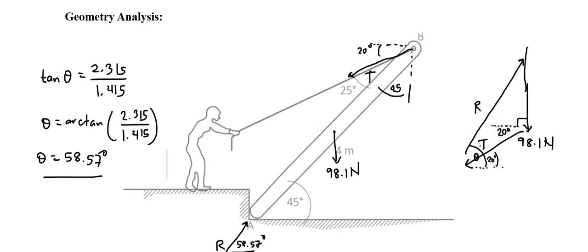Given that this angle here must also be equal to 20 degrees by the Alternate Interior Angle Theorem, therefore this remaining angle must be equal to 58.57 degrees minus 20. In other words, this angle right here must be equal to 38.57 degrees.